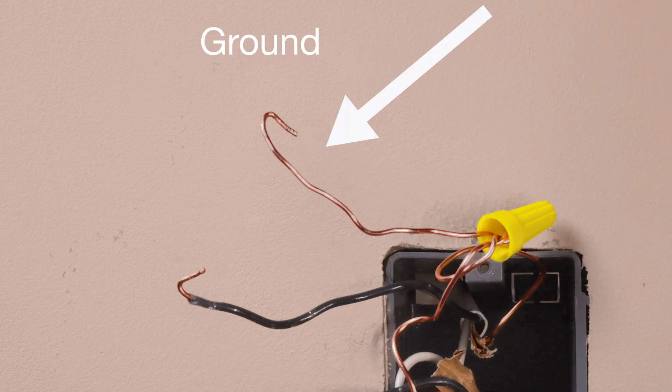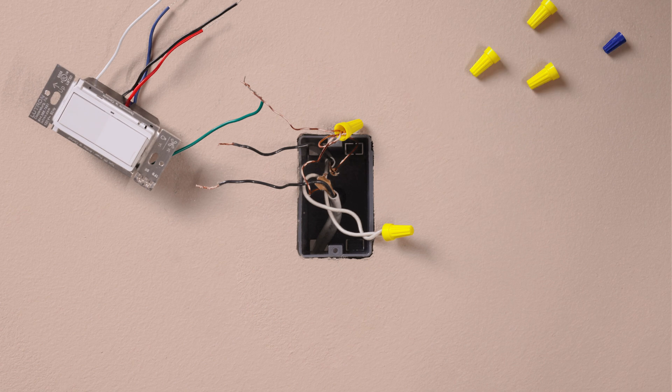Connect the ground wire, typically a bare copper wire, to the green wire on the switch.